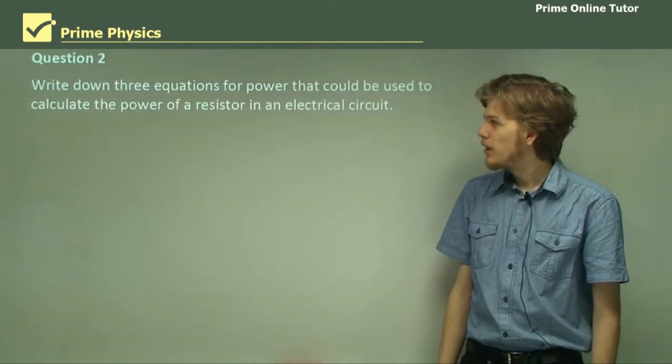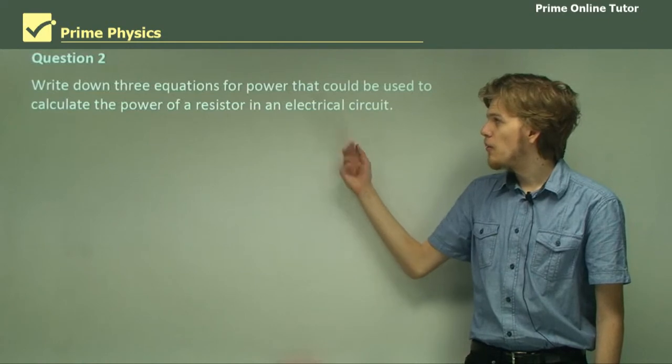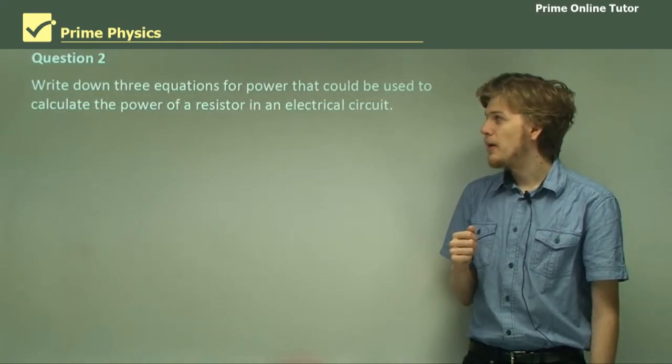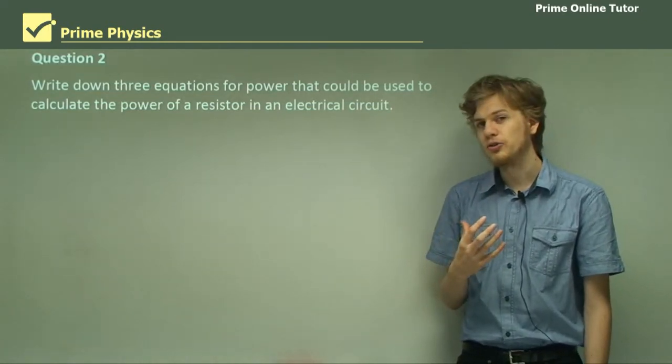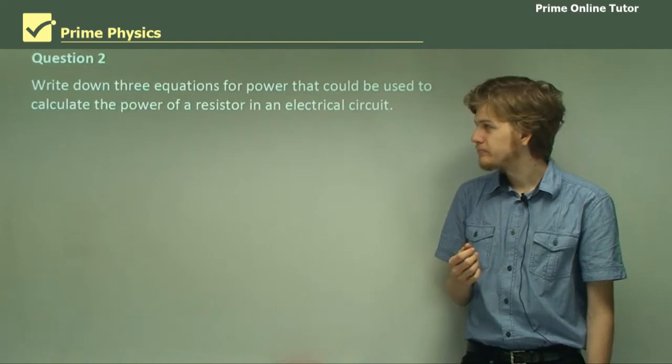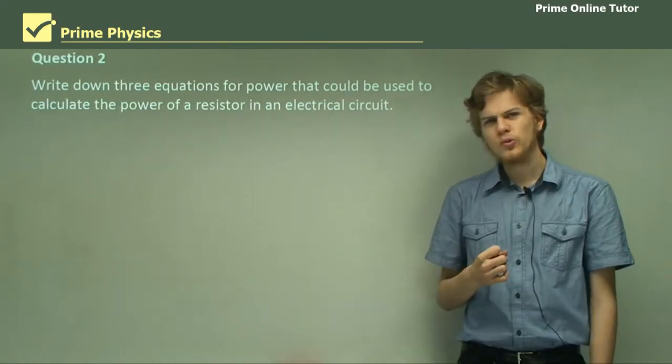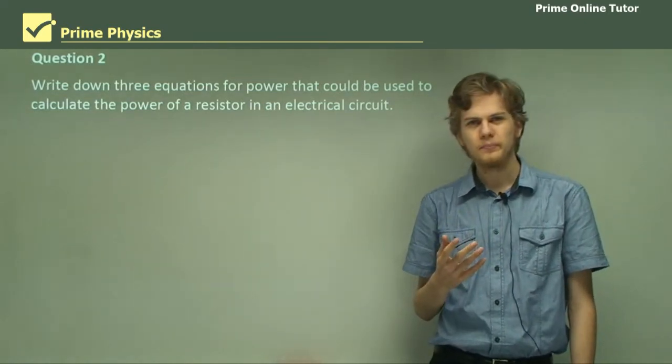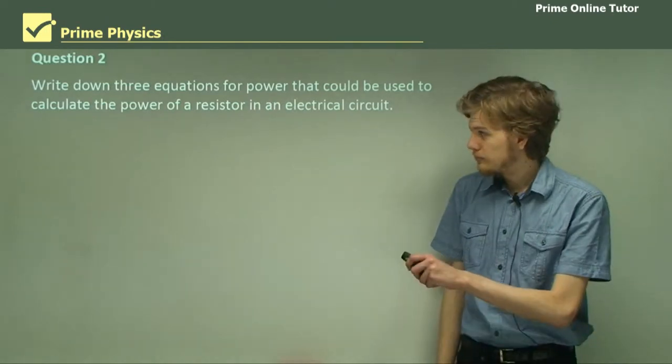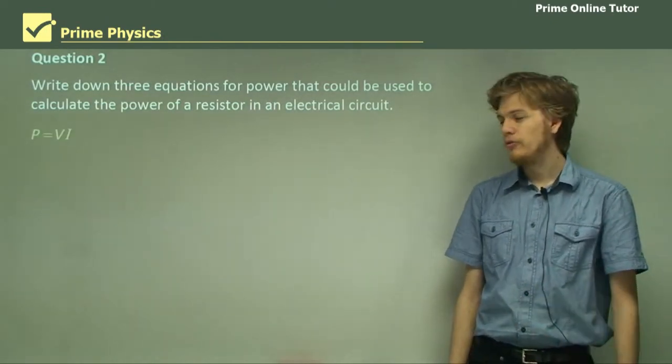Question 2. Write down three equations for power that could be used to calculate the power of a resistor in an electrical circuit. Alright, so what equations do we know for power? Well, P equals VI is one of them.